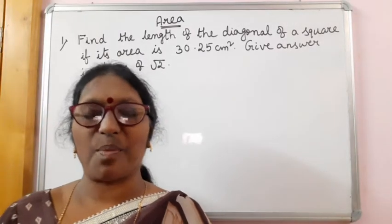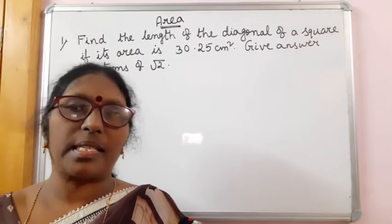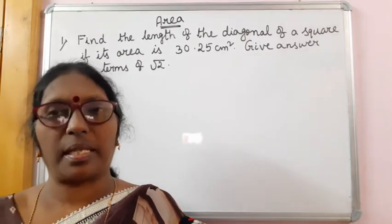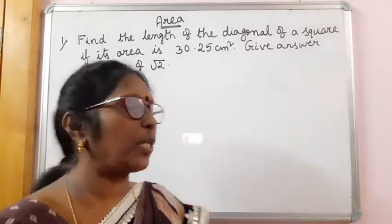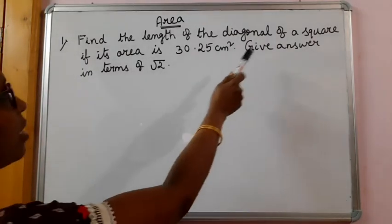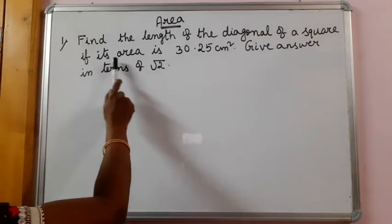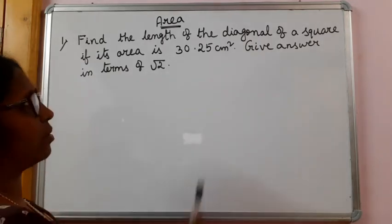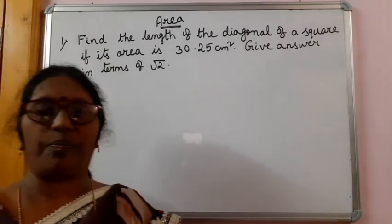Welcome to Geetha's Maths. Today let us have some problems based on chapter area. Your first problem is: find the length of the diagonal of the square if its area is 30.25 cm square. Give answer in terms of root 2.